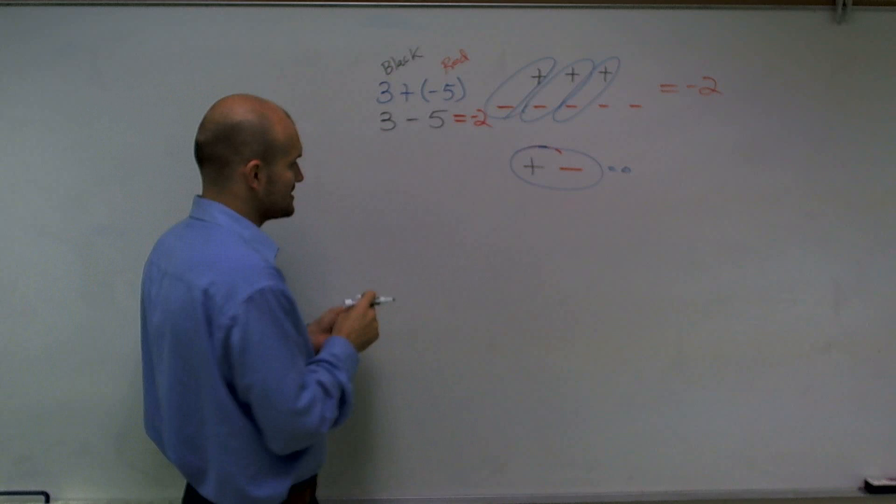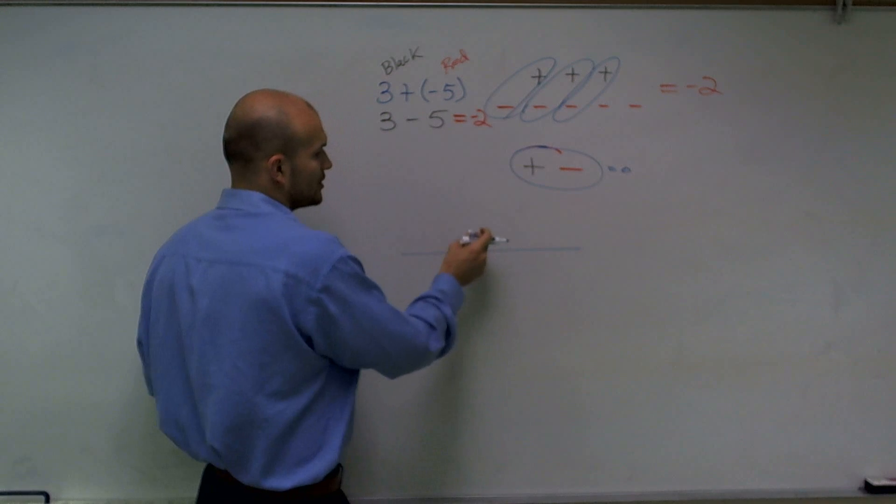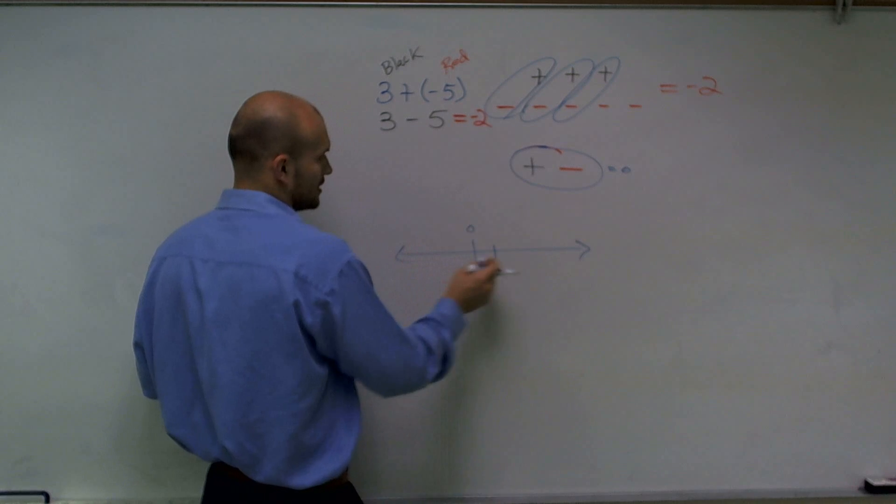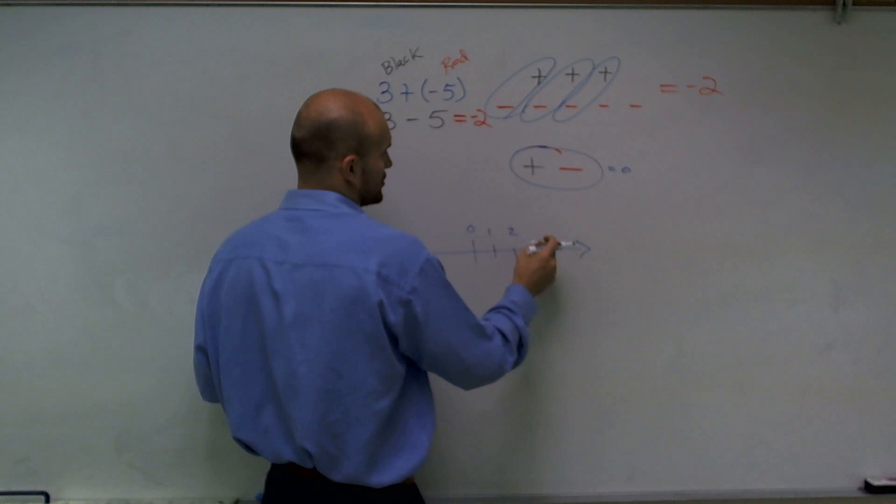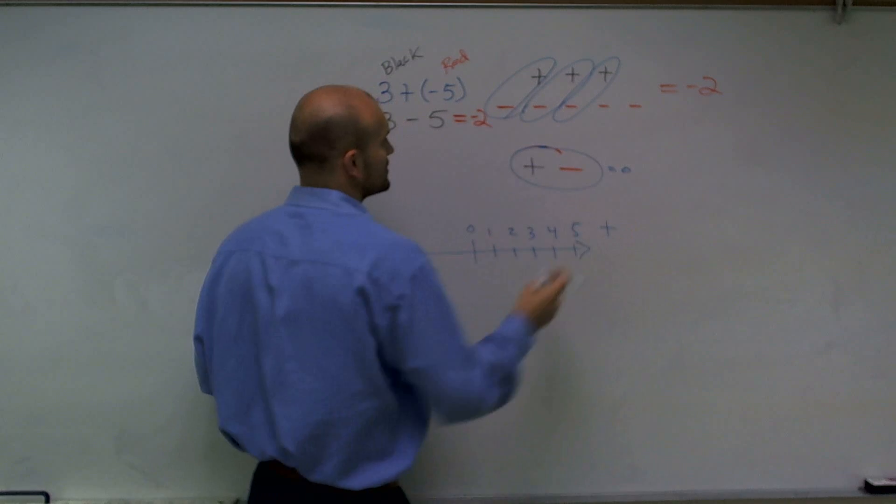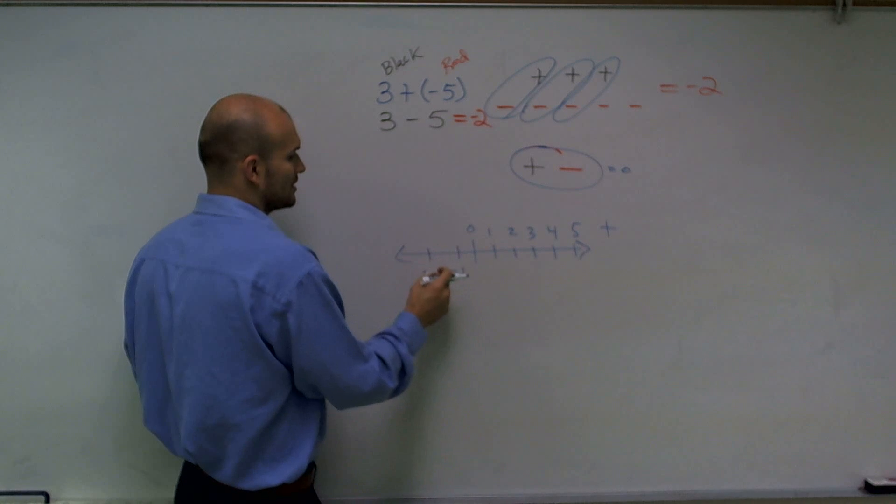One last way that I'll represent this is let's take a look at a number line. And hopefully you should be familiar with the number line where it's going to be like 1, 2, 3, 4, 5, and let's call this direction to the right positive and direction to the left negative.